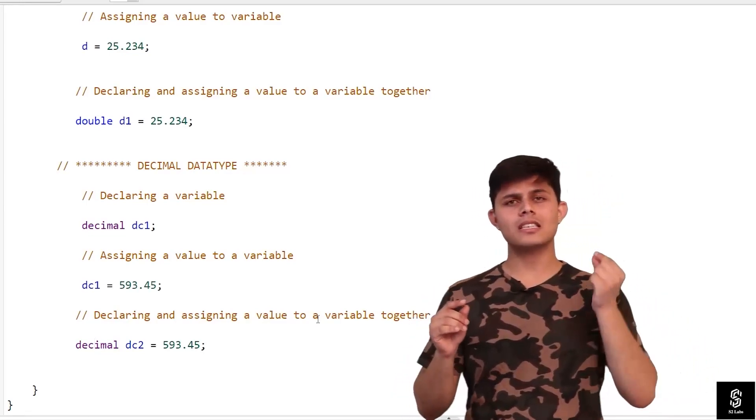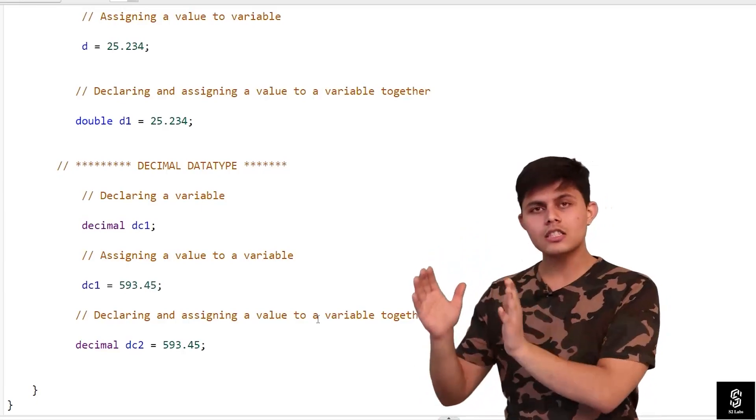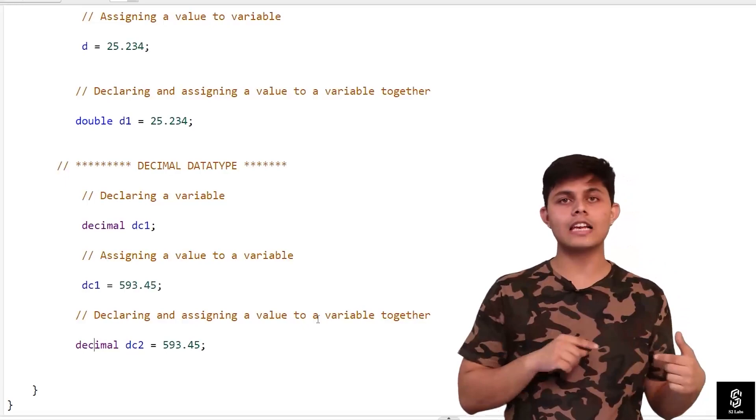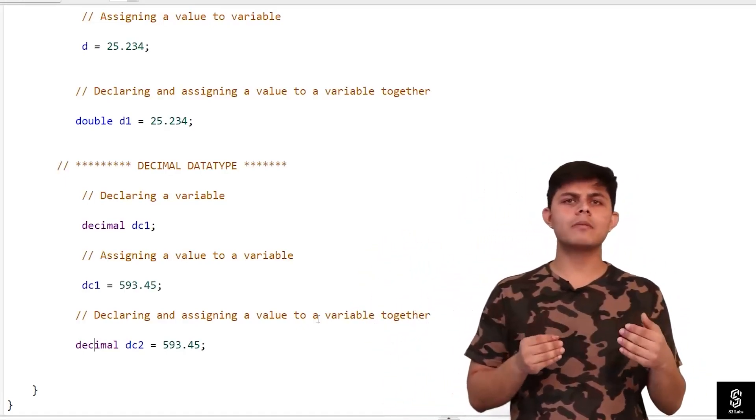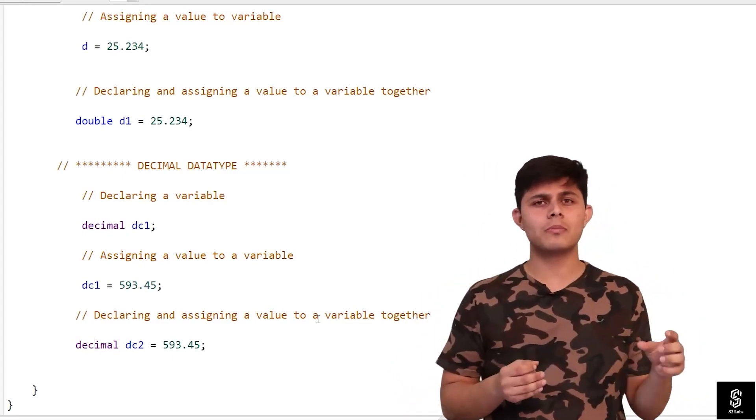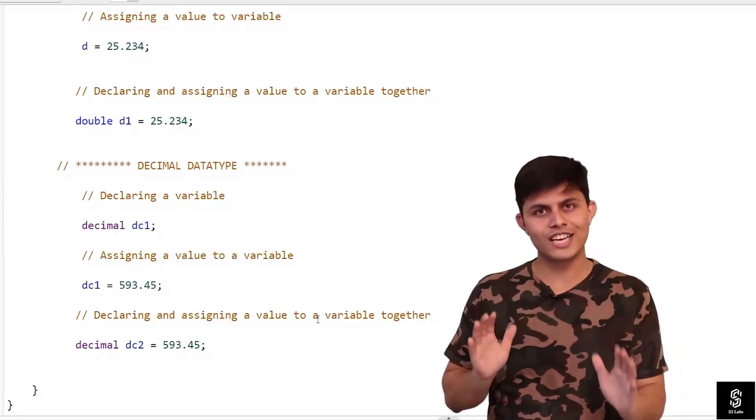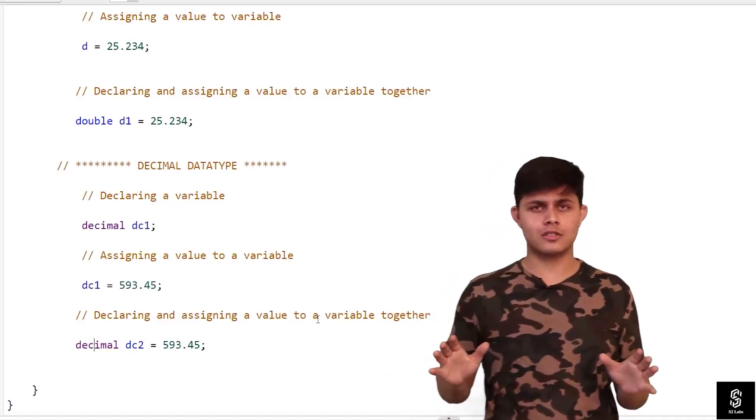The currency fields that you create in Salesforce return a decimal type value instead of your double type value. And decimal data type has some more functions when it comes to the decimal places or when it comes to rounding off, as compared to your double data type. So that's basically what the difference is.